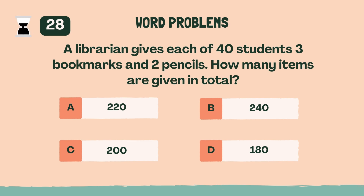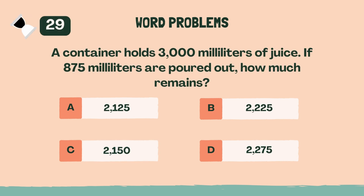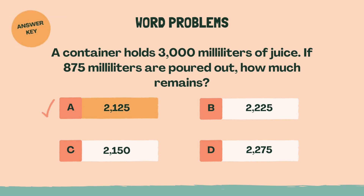A librarian gives each of 40 students three bookmarks and two pencils. How many items are given in total? The answer is C, 200. A container holds 3,000 milliliters of juice. If 875 milliliters are poured out, how much remains? The answer is A, 2,125.